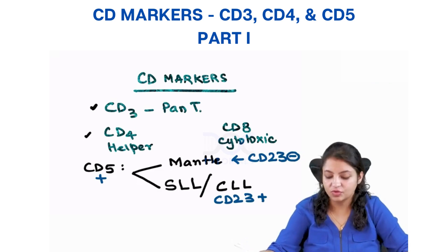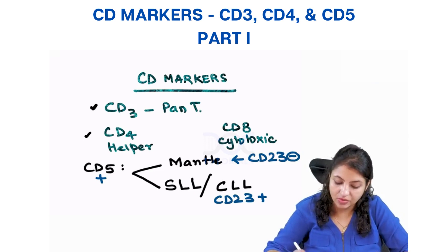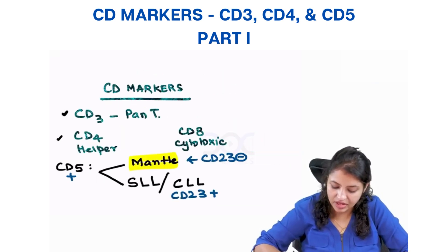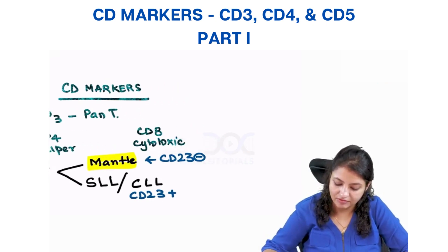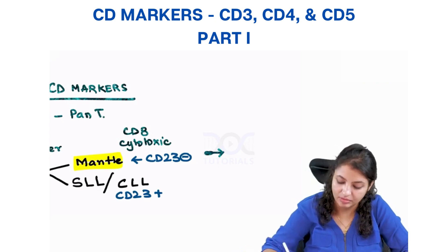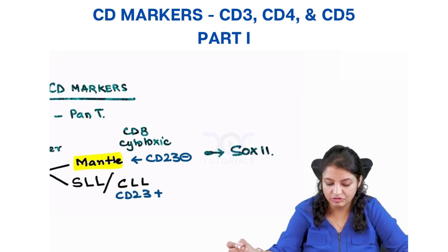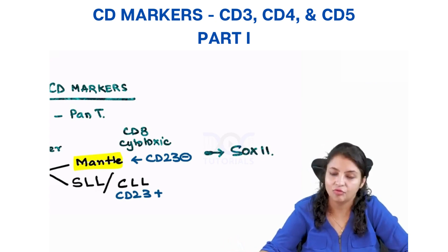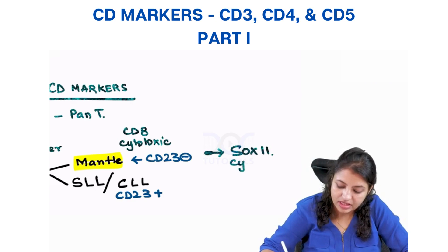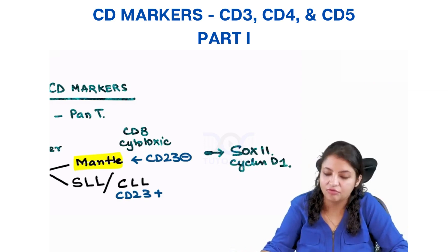CD5 positive and CD23 negative is mantle cell lymphoma. CD5 positive and CD23 positive is CLL. If somebody asks the most specific marker for mantle cell lymphoma, it is SOX11. SOX11 is the most specific marker of mantle cell lymphoma, and of course cyclin D1 is also positive in mantle cell lymphoma.